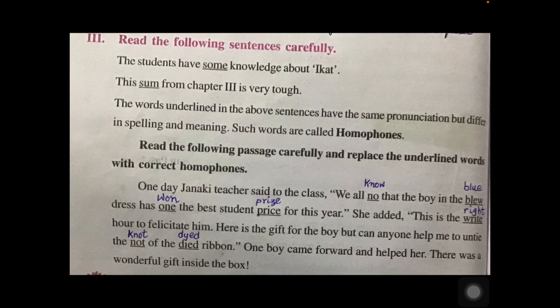Now read these sentences: 'The students have some knowledge about ikat.' 'This sum from chapter three is very tough.' The underlined word in the first sentence is 'some' (S-O-M-E) and in the second is 'sum' (S-U-M) — both are pronounced the same way but differ in spelling and meaning. Such words with the same pronunciation but different spellings and meanings are called homophones, unlike homographs where both spelling and pronunciation are the same.